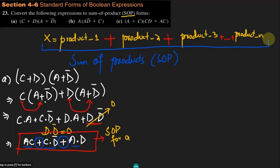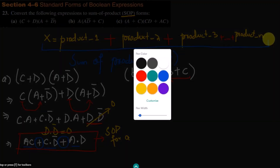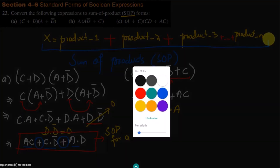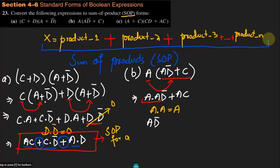Similarly, for part (b) we have a(ad' + c). Multiplying a through the terms inside gives a·ad prime and a·c. Since a·a equals a (by Boolean algebra), we simplify to a·d prime plus a·c. This is the sum of product expression for part (b).